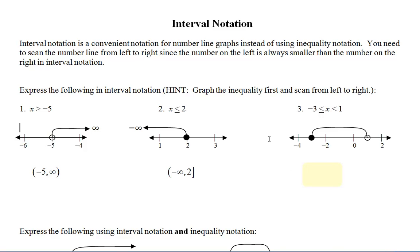So as I do my scanning from the left, I see my shading starts at negative 3, including it, goes to 1 and that's where it stops. Here's your inequality notation, this is the graphical version, and these are called your interval notation. Very quick.